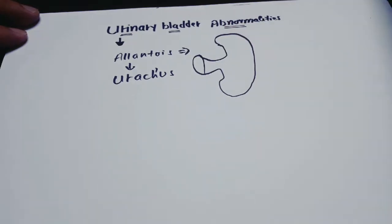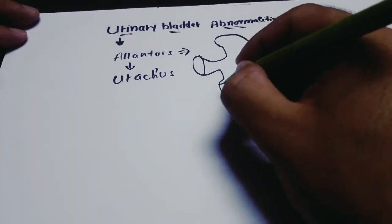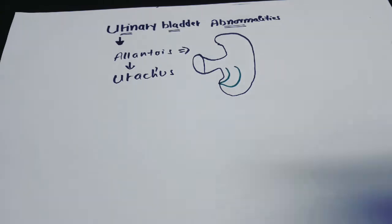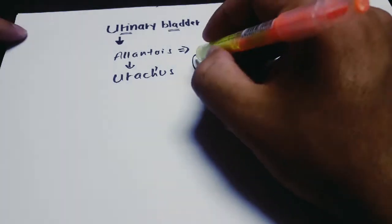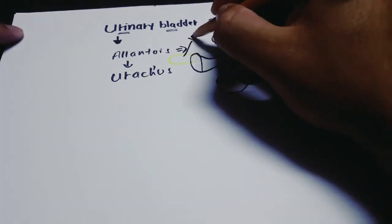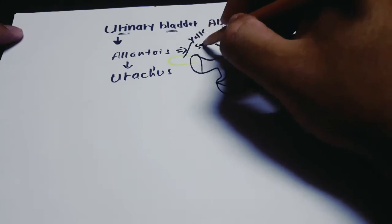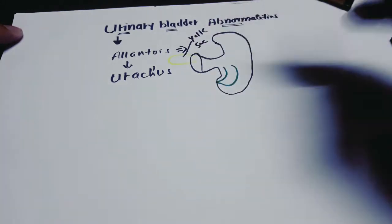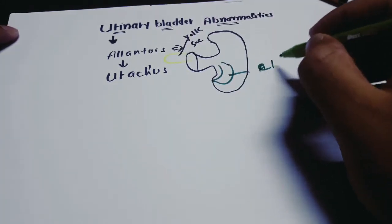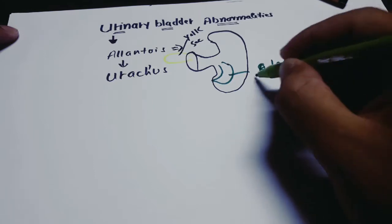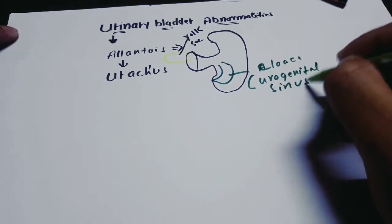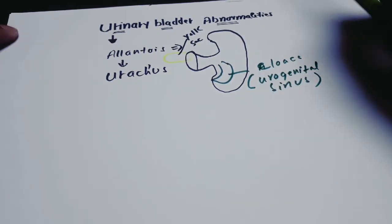Today I'll be talking about the allantois and urachus. As you can see in the diagram, this is the yolk sac, and this is the urogenital sinus, which is the part of the cloaca and which is going to form the urinary bladder.